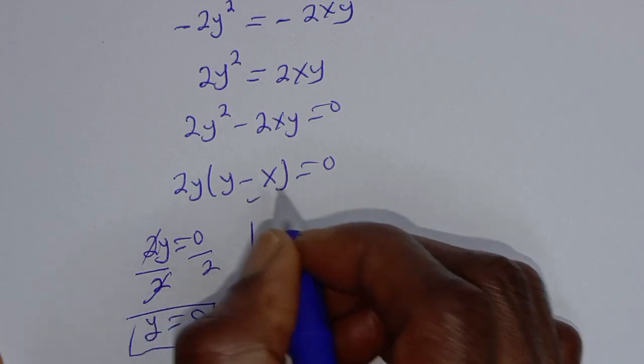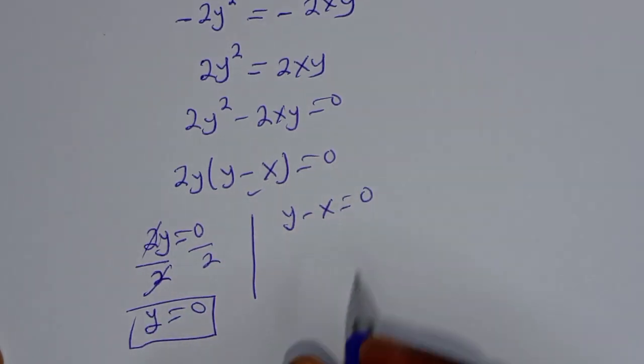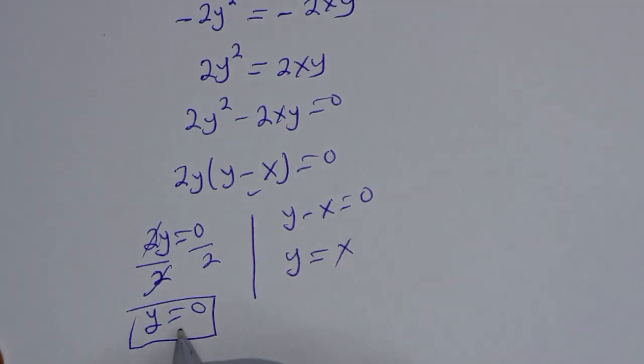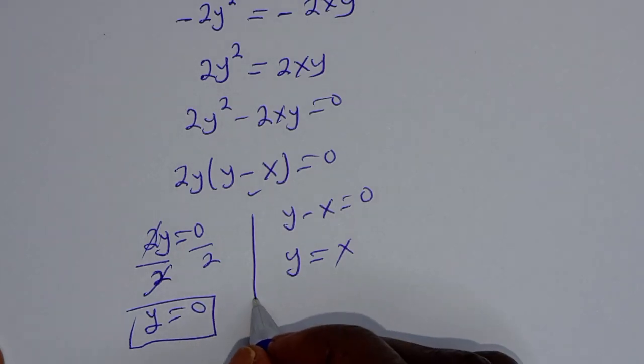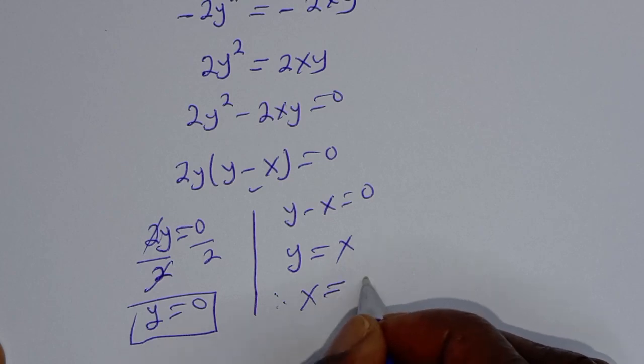And the second case here is y minus x is equal to 0. Then y is equal to x. But you know that y is equal to 0, therefore x is equal to 0.